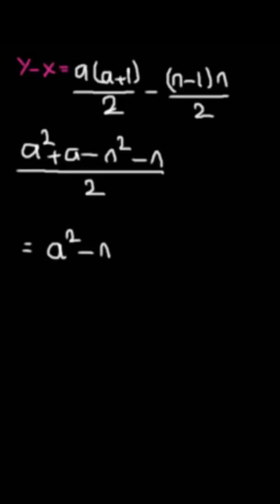And let's clear this mess up. Now, we have A to the second power minus N to the second power plus A minus N divided by 2.